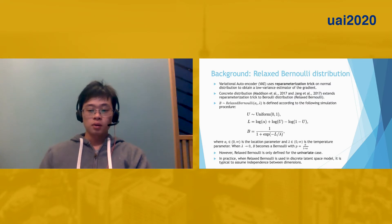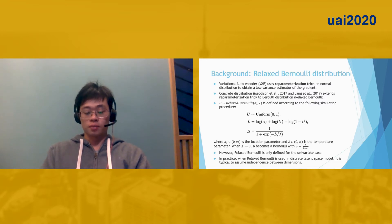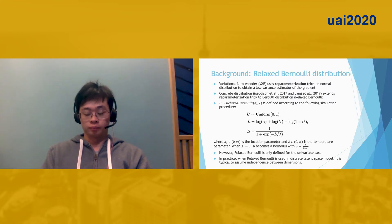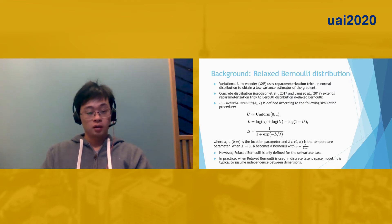Relax-Bernoulli is defined according to a simulation procedure of two steps. First, one needs to generate a uniformly distributed noise u. And then one needs to perform a deterministic transformation on u. This transformation is parameterized by a learnable parameter alpha and a hyperparameter lambda. When the hyperparameter lambda goes to zero, the variable b would become a Bernoulli with p equal to alpha divided by 1 plus alpha.